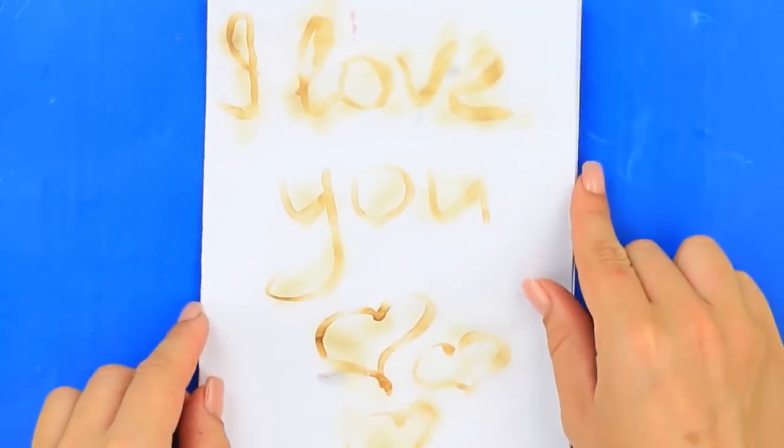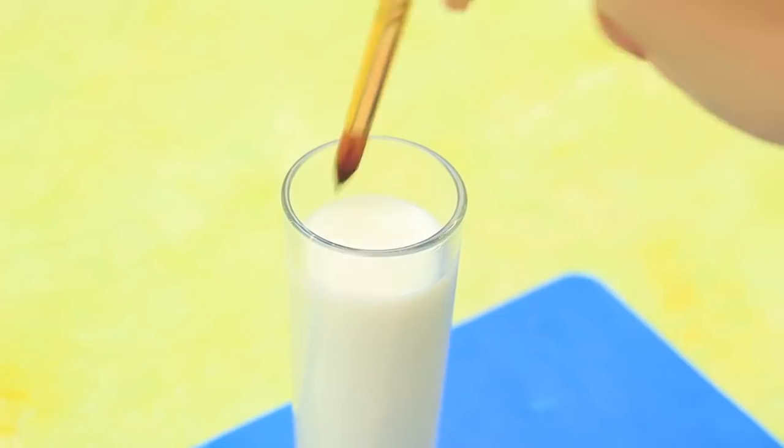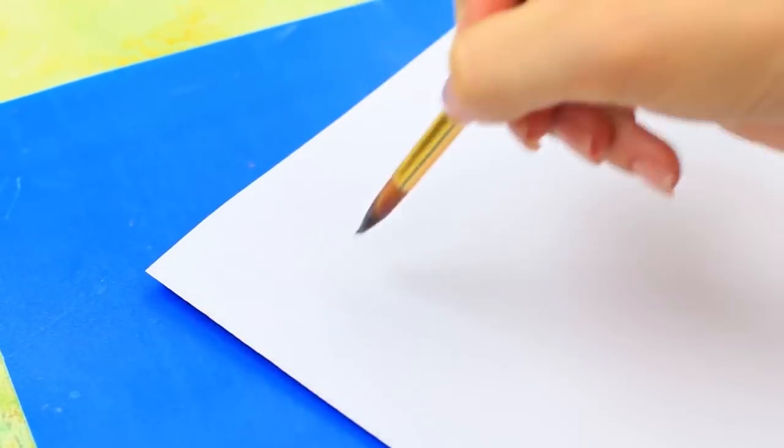The invisible ink message is one of the safest tricks in our list. We'll need paper, milk, and a brush. Dip the brush in the milk and write down a message you want to conceal from others. Let only the recipient see it.